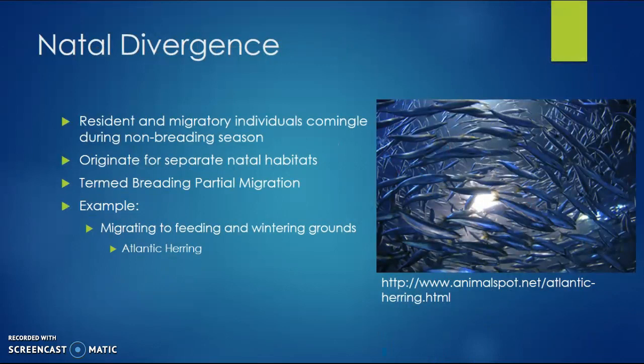Natal divergence is when resident and migratory individuals co-mingle during breeding season. They originally have separate natal habitats, and this is termed breeding partial migration. An example of this would be the Atlantic herring, who migrate to feeding grounds and wintering grounds that are separate from their breeding season habitat.